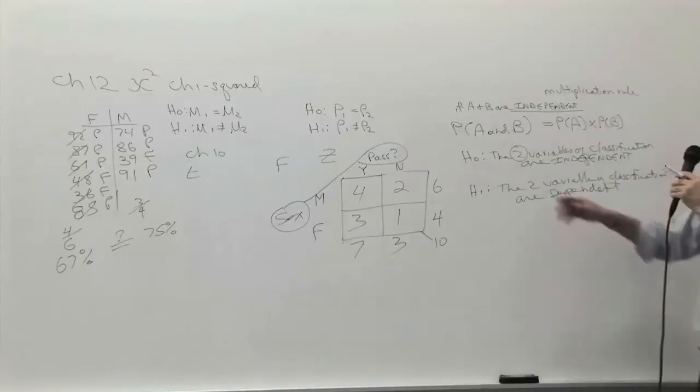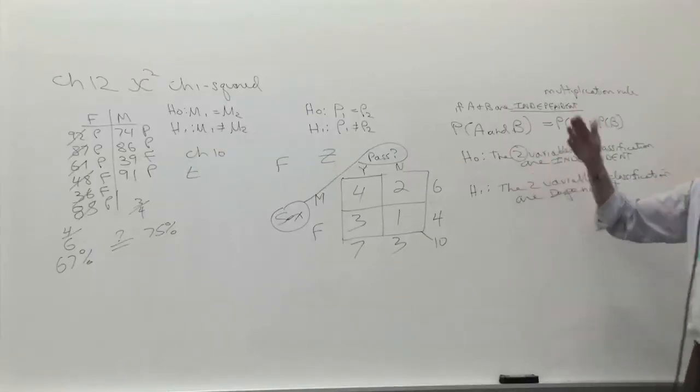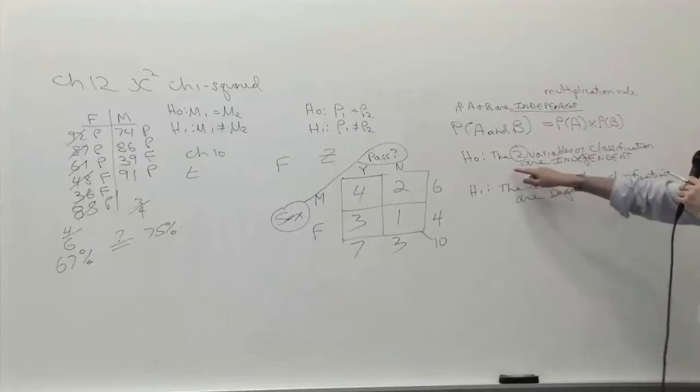Since we give the benefit of the doubt to the H0, when we do all our calculations - and again, you don't know what I'm talking about from Stat 1 - the H0 is that they're independent.